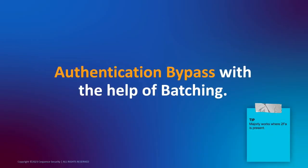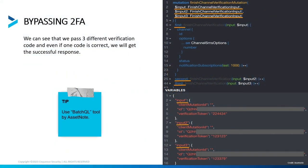Authentication bypass can also be done using batching. As I discussed with the OTP bypass, the key mechanism is the variable function — you can include multiple variables inside one query. You can see there are three OTP inputs in the example, and you can give 1,000 OTPs just as easily. It's not an issue as long as batching is present as a vulnerability.